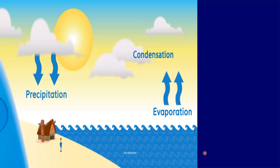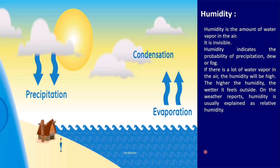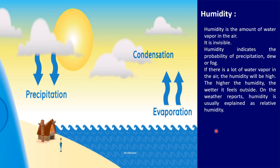Discussing about humidity — it is the amount of water vapor in the air, and it is invisible. Humidity indicates the probability of precipitation, dew or fog. If there is a lot of water vapor in the air, the humidity will be high — the higher the humidity, the wetter it feels outside. On weather reports, humidity is usually expressed as relative humidity. Water from the sea evaporates, then goes into the state of condensation and then falls as precipitation.